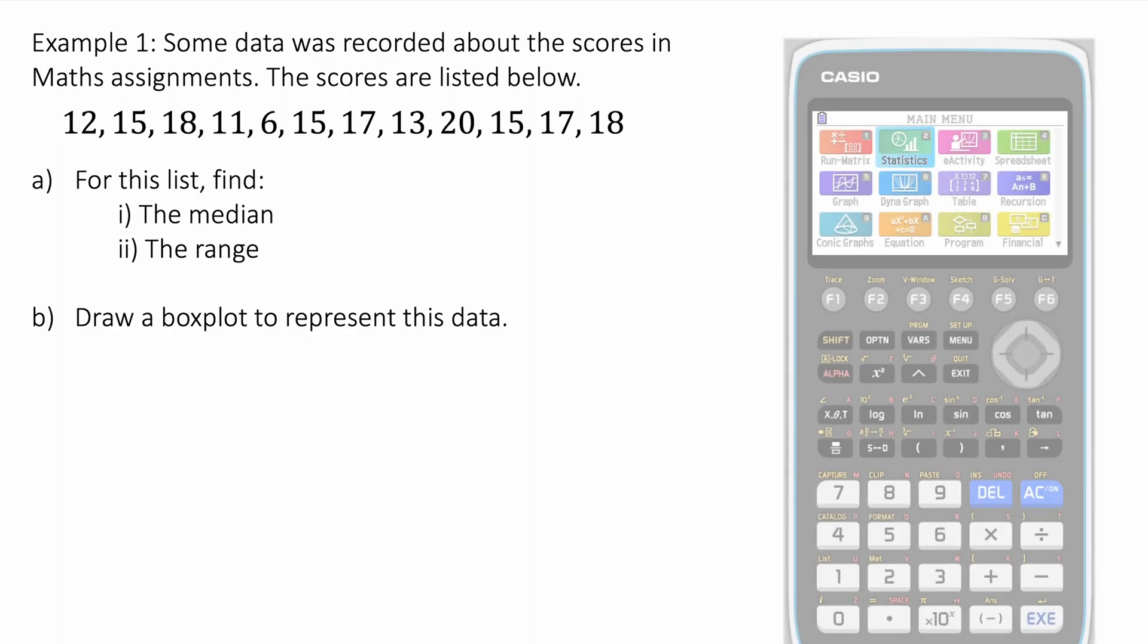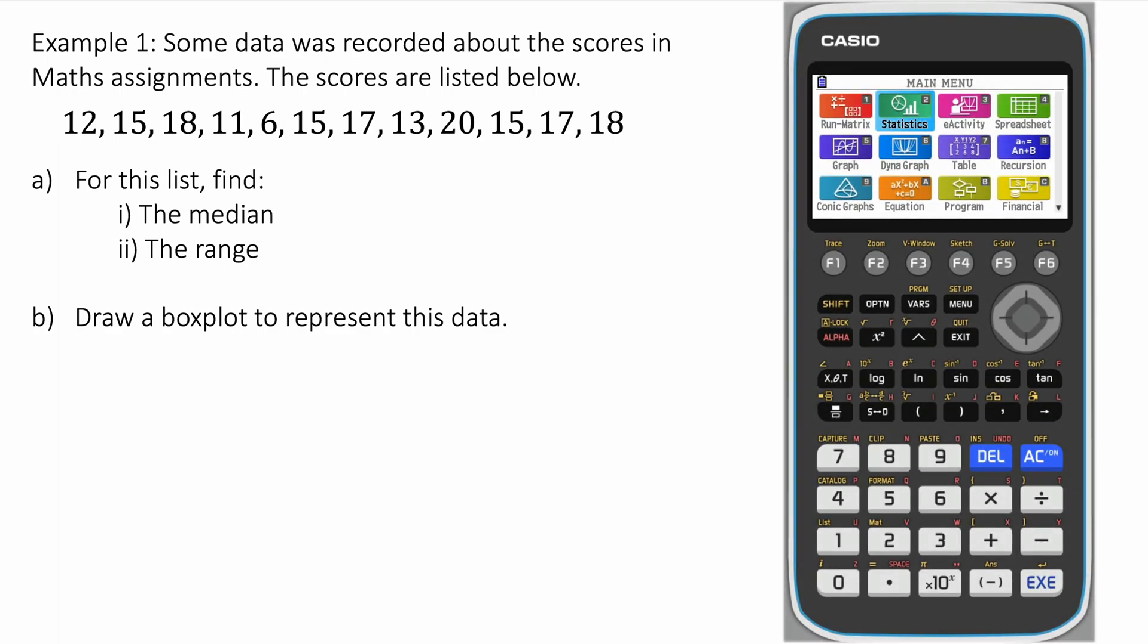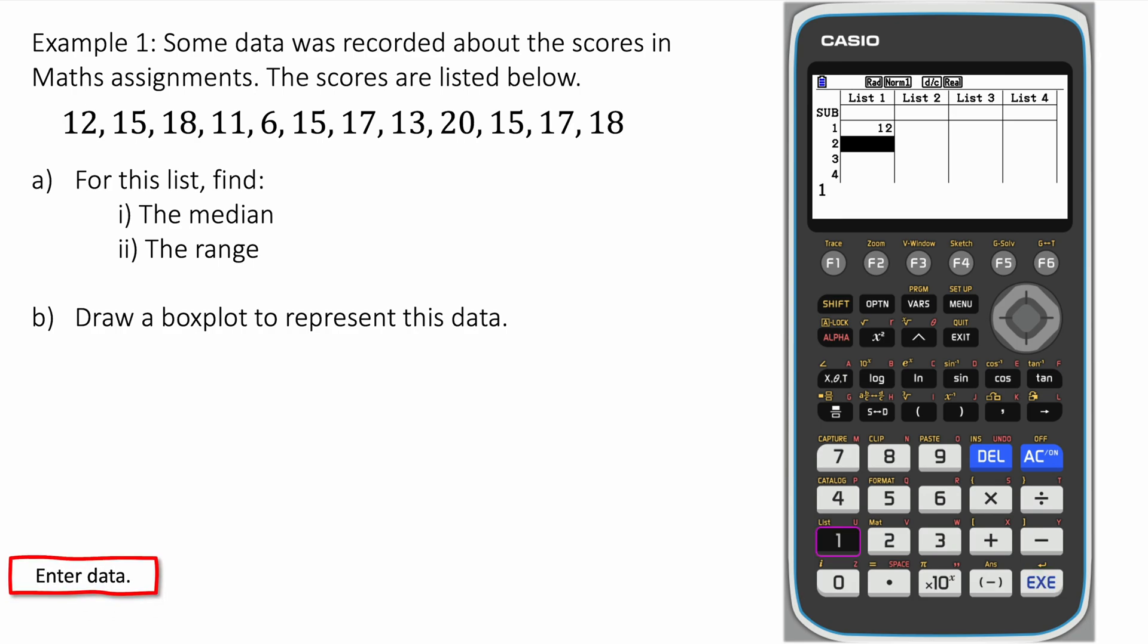So we're going to get our GDC and use it to calculate this. We go to statistics and we'll enter our data, enter our list of data. When you're pressing each number just press EXE after each number to move to the next row. Like this.